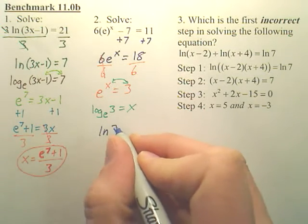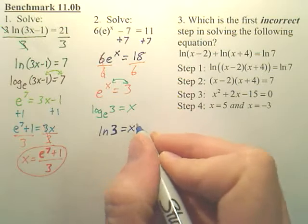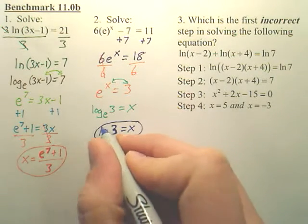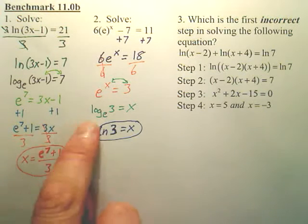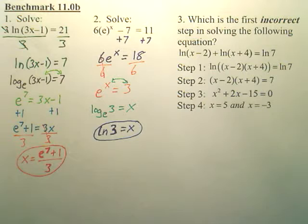So your answer is ln 3 equals x, or x equals ln 3. Your answer is simply ln 3. Remember, log base e is ln, natural log.